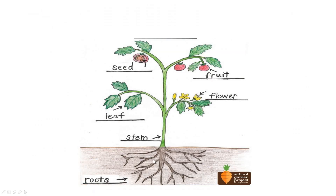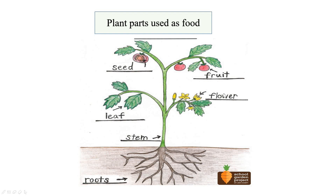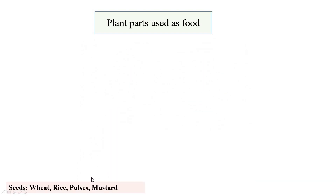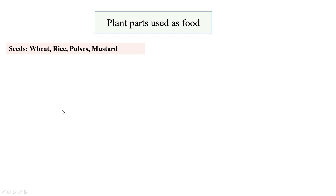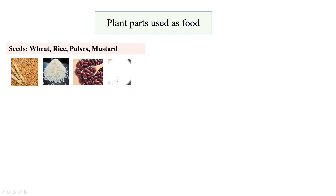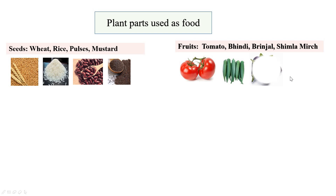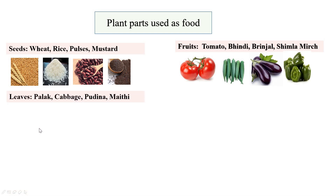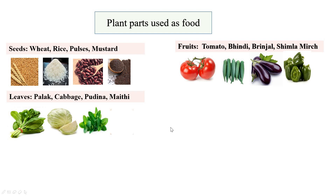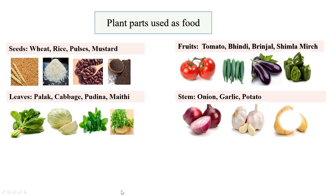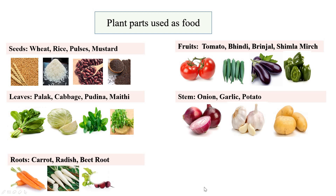Do you know that different parts of the plant such as seeds, fruit, leaf, flower, stem, and roots are used as food? For example, we eat seeds of wheat, rice, pulses and mustard plants. We eat fruits of tomato, bindi, brinjal and shimla mirch plants. The leaves of palak, cabbage, pudina and methi plants are eaten. The stem of onion, garlic and potato plants are eaten. Roots of carrot, radish and beetroot plants are eaten. Whereas we eat flowers of cauliflower and broccoli plants.